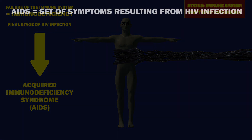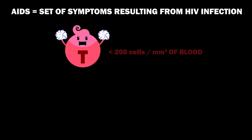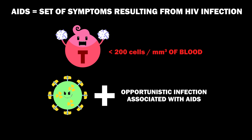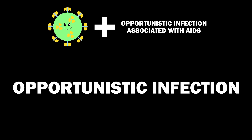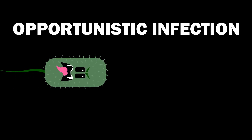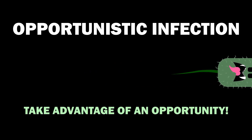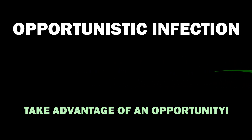AIDS is not the virus, but rather a set of symptoms that result from the virus. It is defined as either having a T-cell count below 200 cells per mm³ of blood, or having HIV and at least one opportunistic infection associated with AIDS, regardless of T-cell count. An opportunistic infection is an infection caused by pathogens that would normally not be a problem, but which take advantage of an opportunity, such as a compromised immune system.